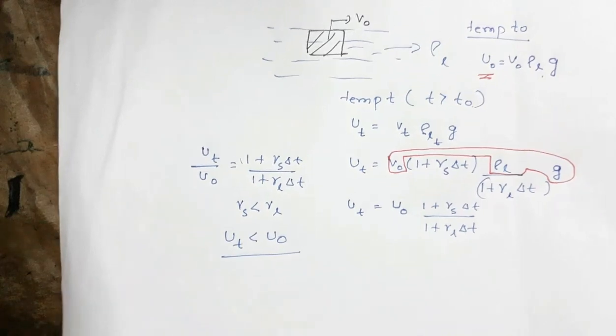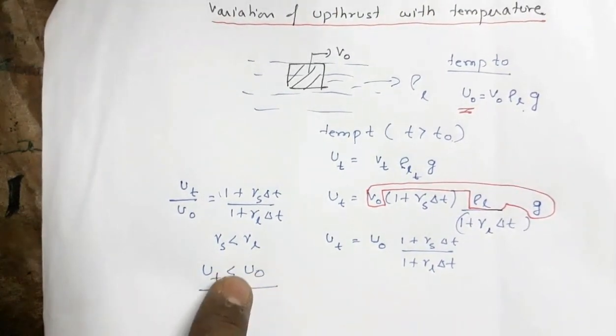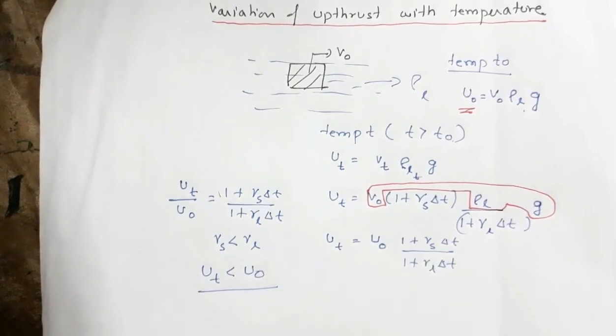So that means upthrust decreases with increase in temperature. So this is the inference of this entire deduction that upthrust decreases with increase in temperature.